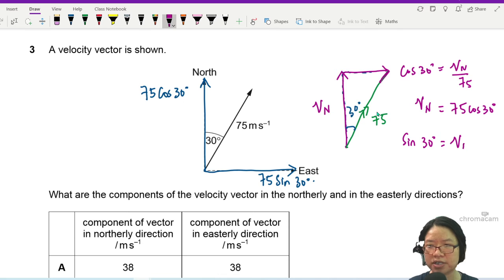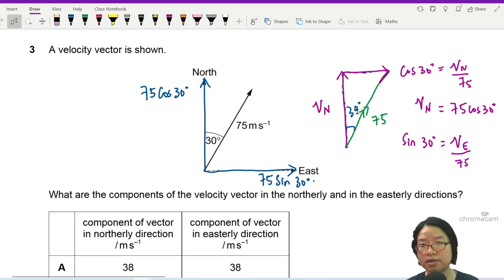Let's say this is velocity in the easterly direction divided by 75. Sine is opposite over hypotenuse.